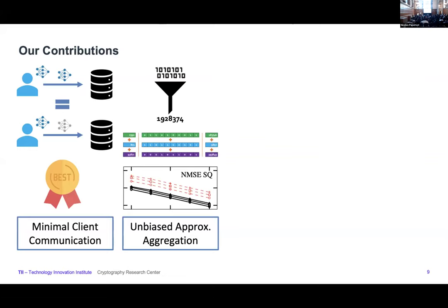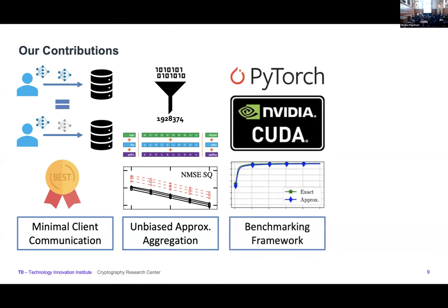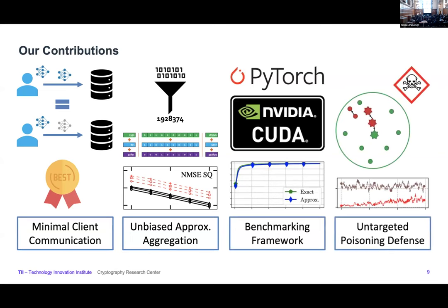The second contribution is from the aggregation server side. We use secure multi-party computation techniques, which involve communication among servers to aggregate. We minimize this inter-server communication by doing some amount of approximation in the aggregation that results in unbiased aggregation itself, significantly reducing overall server communication. Third, we provide a benchmarking framework written in PyTorch that supports GPU acceleration to evaluate our methods. Fourth, we propose a defense mechanism that tackles untargeted poisoning attacks in this quantized setting.